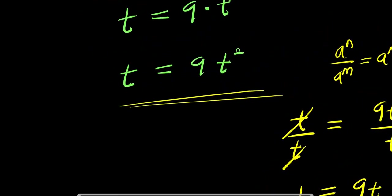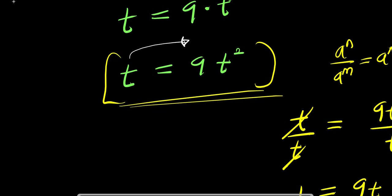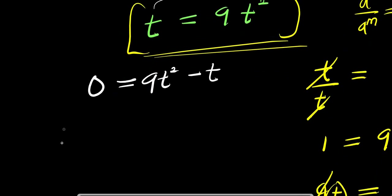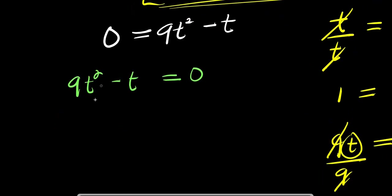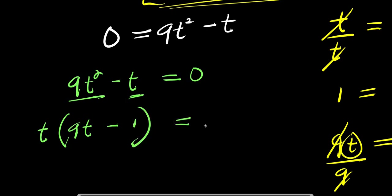As I said earlier, you can solve this using two different methods. Another way is to form a quadratic equation by rearranging t equals 9t² to get 9t² minus t equals zero. I factor out the common term t, giving t times (9t minus 1) equals zero.